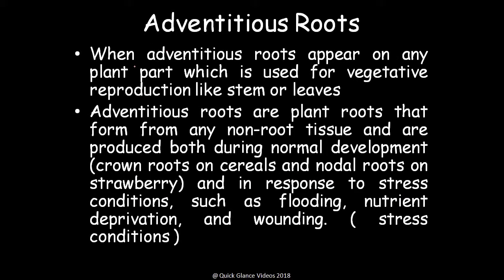Next are adventitious roots. When adventitious roots appear on any plant part — such as stem or leaves — they are used for vegetative reproduction. Adventitious roots can appear in any part of the plant. They arise either under normal conditions, such as crown roots in cereals or nodal roots in strawberry, or in response to stress conditions like flood, nutrient deprivation, or wounding.